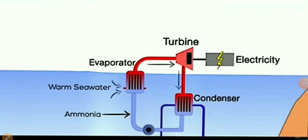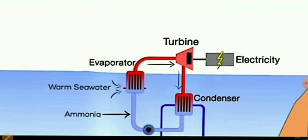To summarize: the system has a turbine, an evaporator, a generator, and a condenser. The warm ocean water is at 21 to 29 degrees centigrade and the cold deep water is at 5 degrees centigrade, giving a difference of about 20 degrees centigrade. We set up a plant and turbine that operates at this 20-degree centigrade range.